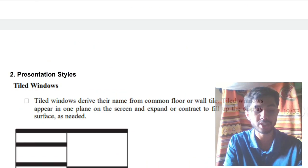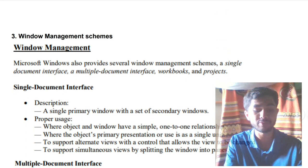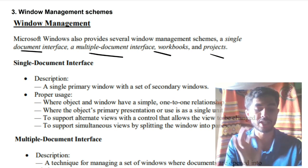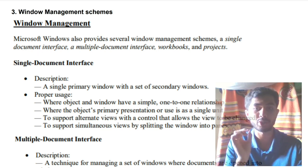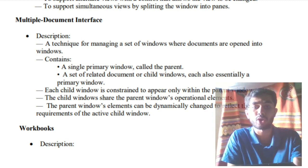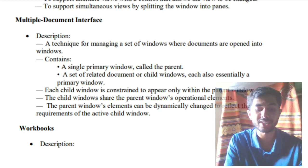Moving on, we have the window management styles. There are totally four window management styles which is single document interface, multiple document interface, projects, and workbooks. What are the projects and the workbooks, what is the single and document, multiple document? Single document interface will just have one single primary window in that you'll be doing all the stuffs. The information is given here, go through it. The multiple document interface you can do multiple interfaces in just one single interface and you can open a secondary window or also known as a child window. All the stuffs can be done in the multiple document interface.